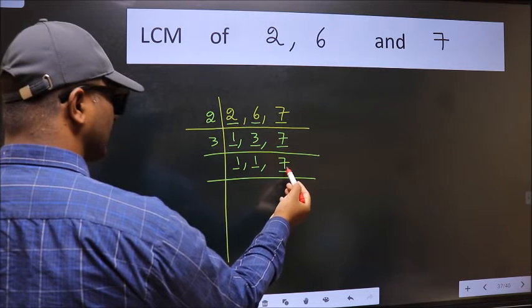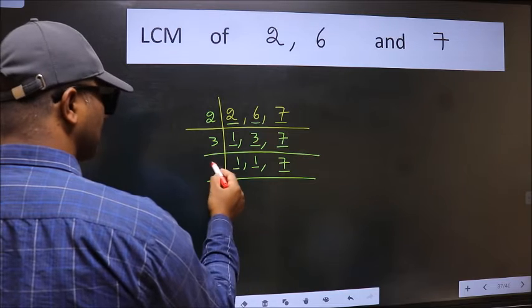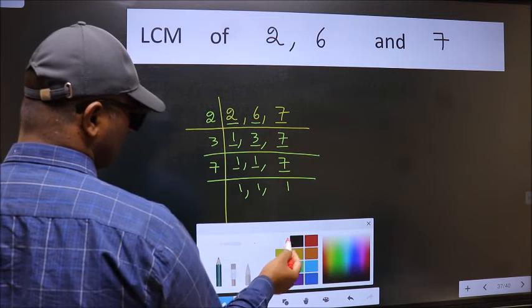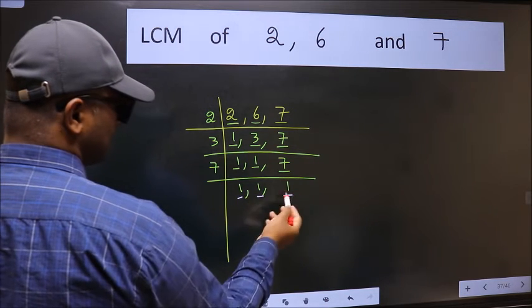So focus on the next number 7. 7 is a prime number so 7 wants 7. So we got 1 in all the 3 places.